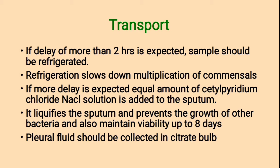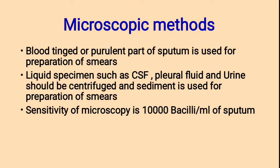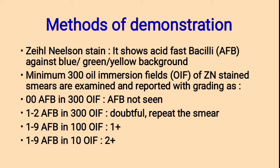Pleural fluid should be collected in a citrate bulb. Microscopic methods — blood-tinged or purulent part of sputum is used for preparation of smears. Liquid specimens such as cerebrospinal fluid, pleural fluid, and urine should be centrifuged and the sediment is used for preparation of smears. Sensitivity of microscopy is 10,000 bacilli per ml of sputum.